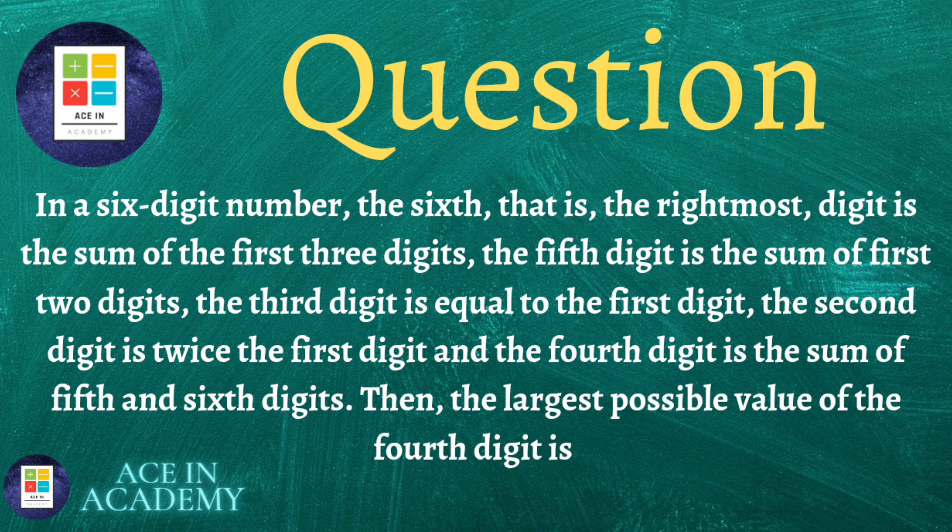Now the question is as follows: in a six digit number, the sixth, that is, the rightmost digit is the sum of the first three digits, the fifth digit is the sum of the first two digits, the third digit is equal to the first digit, the second digit is twice the first digit and the fourth digit is the sum of fifth and sixth digits. Then, the largest possible value of the fourth digit is?